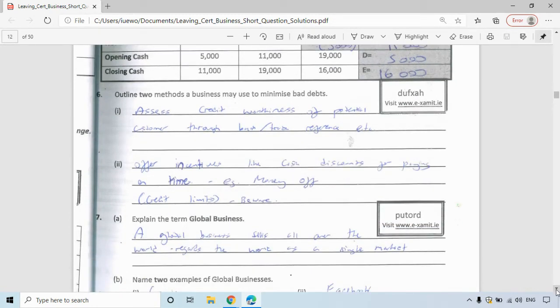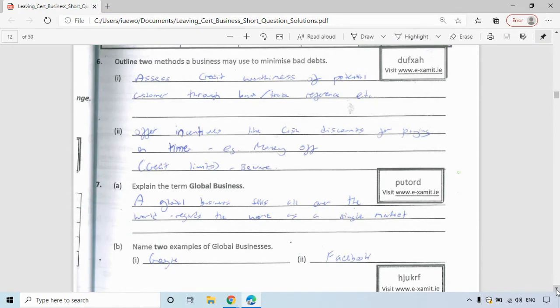For question seven, explain the term global business. So sells all over the world and sees the world as one big market. Google and Facebook would be perfect examples of that. They have the same product available all over the world.